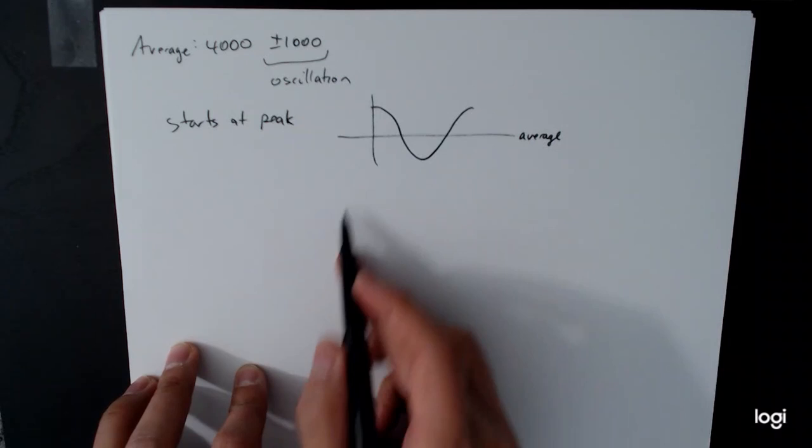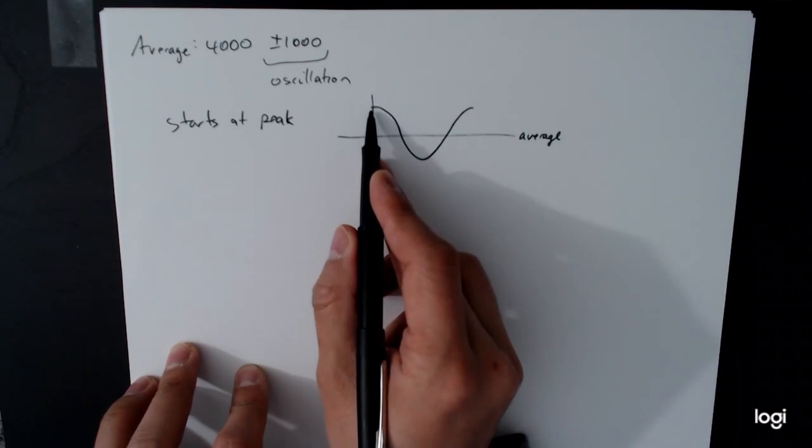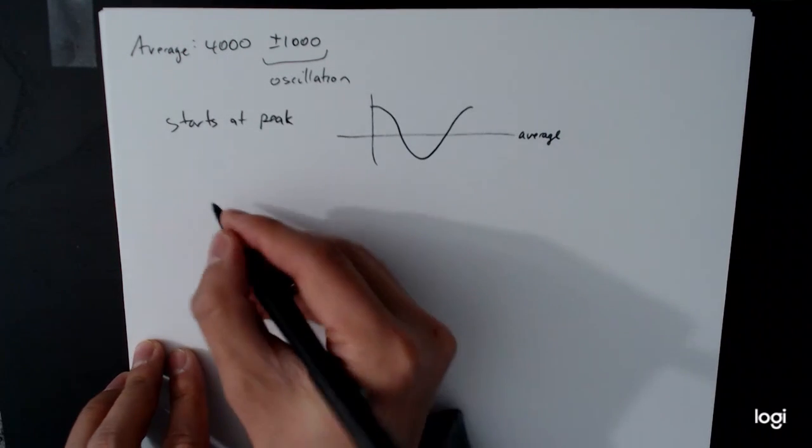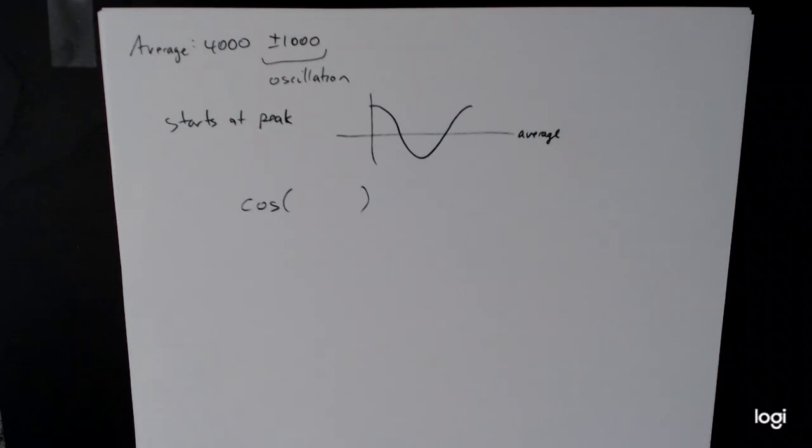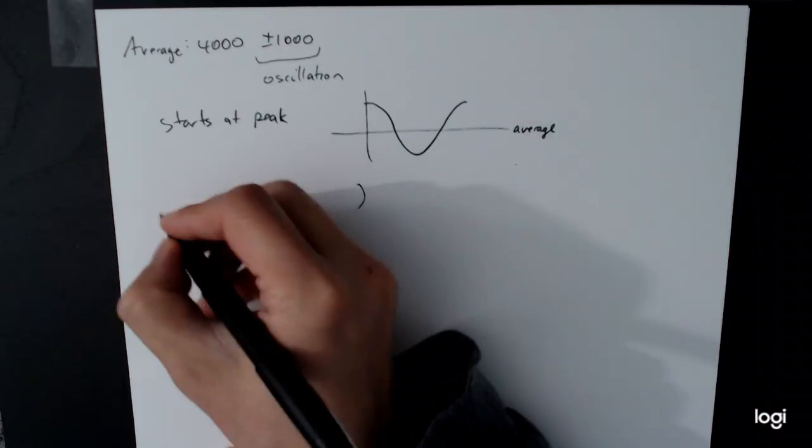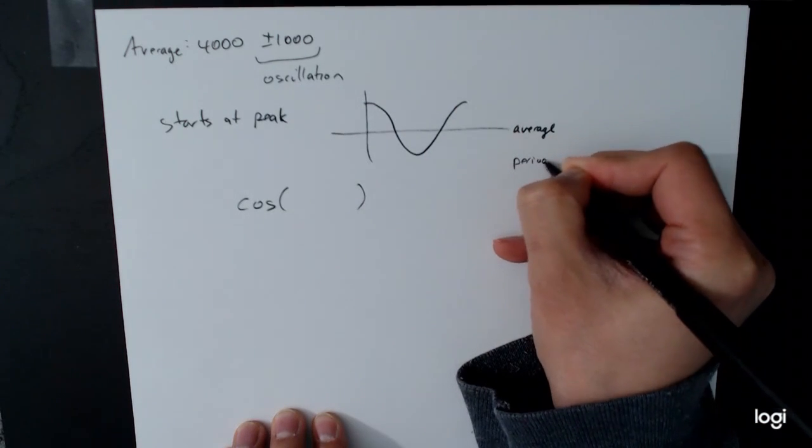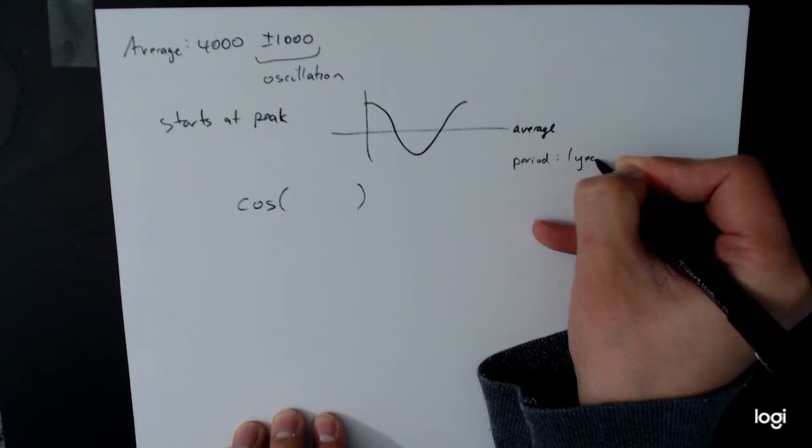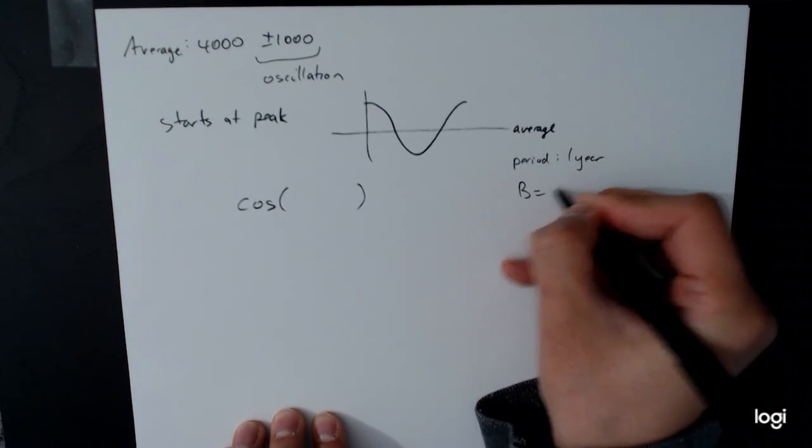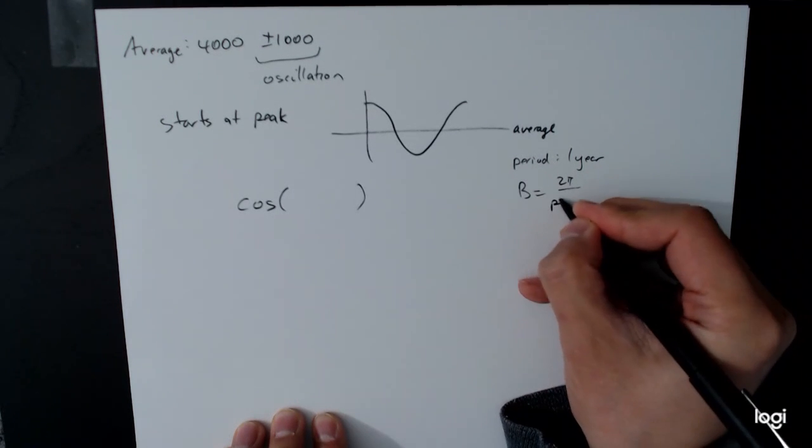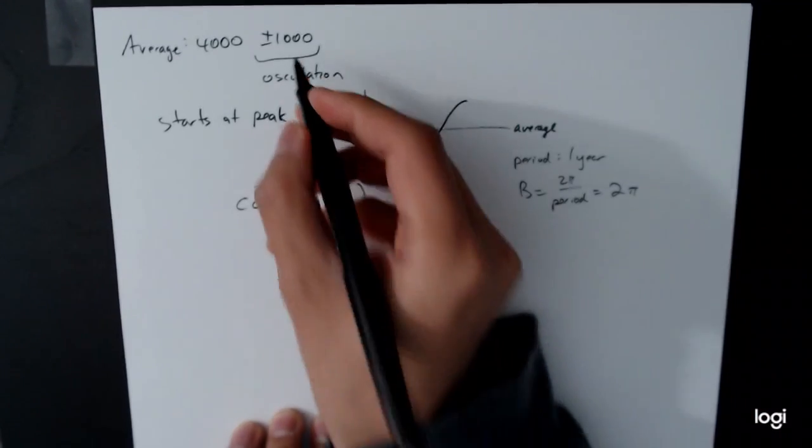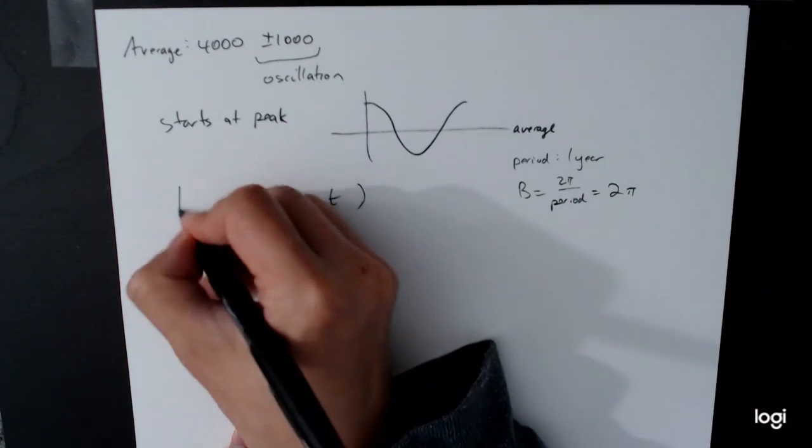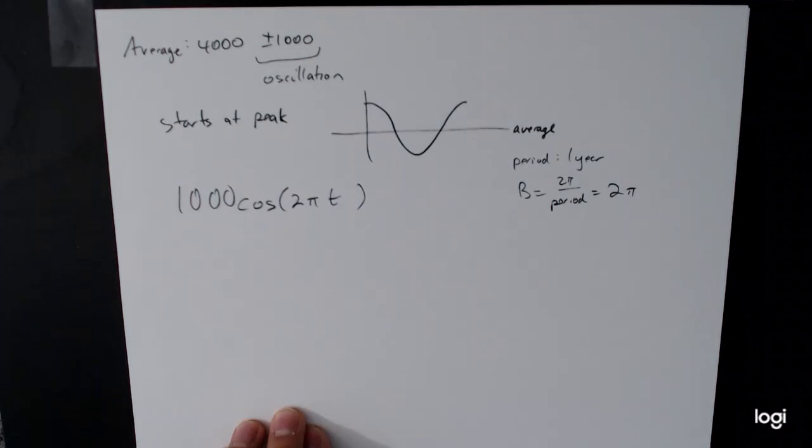This shape tells us it's going to be a cosine. It's going to be a positive cosine because we're starting at a peak instead of a valley. So we're going to have some sort of cosine something. We need it to oscillate once a year, so the period is just one year. Our b value, which is 2 pi over the period, is just 2 pi. So we have cosine of 2 pi t, and then the size of the oscillation, plus or minus 1000, is the amplitude of that internal thing.